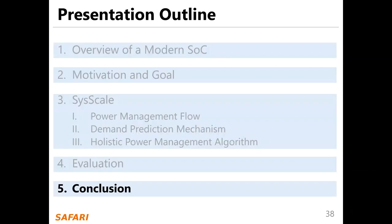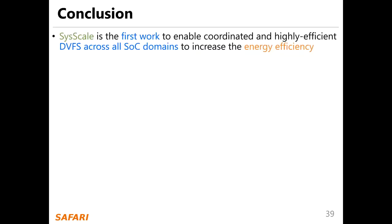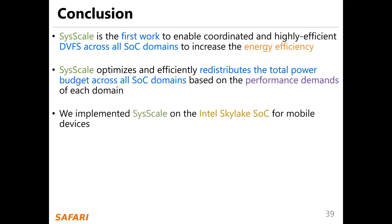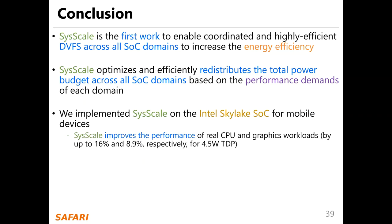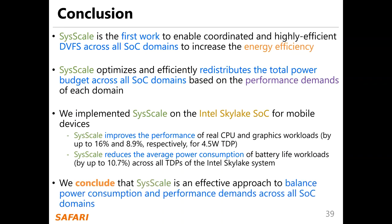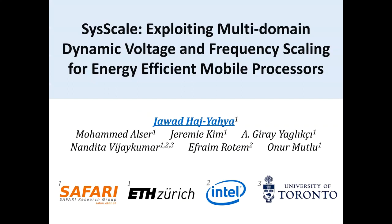Let me quickly conclude my talk. C-Scale is the first work to enable coordinated and highly effective DVFS across all SoC domains to increase energy efficiency. C-Scale optimizes and effectively redistributes the total power budget across all SoC domains based on the performance demand of each domain. We implement C-Scale on the Intel Skylake SoC for mobile devices. C-Scale improves the performance of CPU and graphics workloads by up to 16% and 8.9% respectively for a 4.5 watt thermal design SoC, and reduces the average power consumption of battery life workloads by up to 10.7% across all TDPs of the Intel Skylake system. We conclude that C-Scale is an effective approach to balance power consumption and performance demand across all SoC domains. Thanks for your attention. For more details, I invite you to read our ISCA 2020 paper.